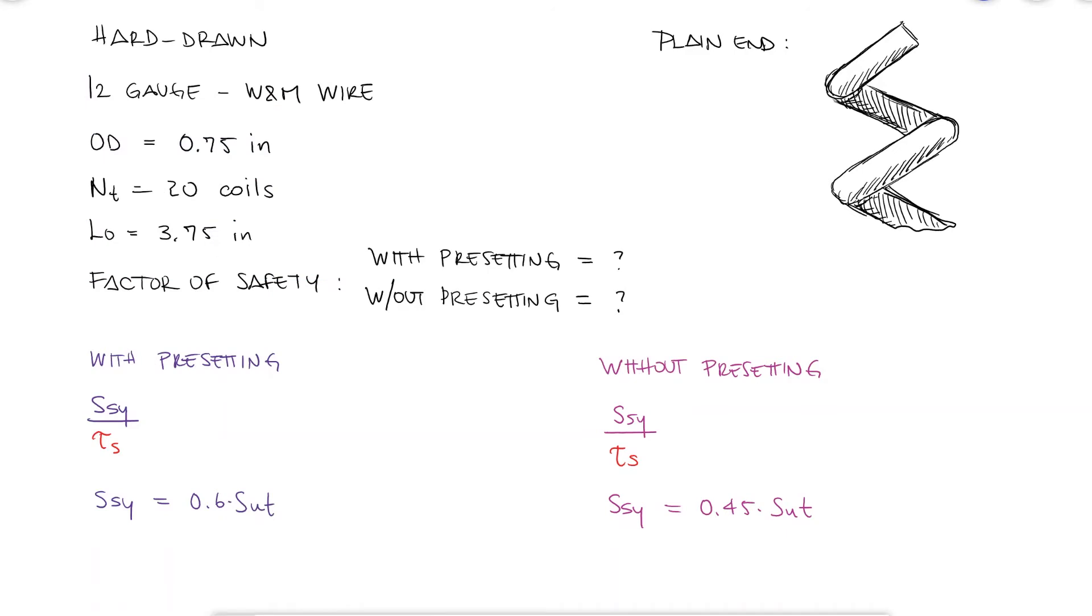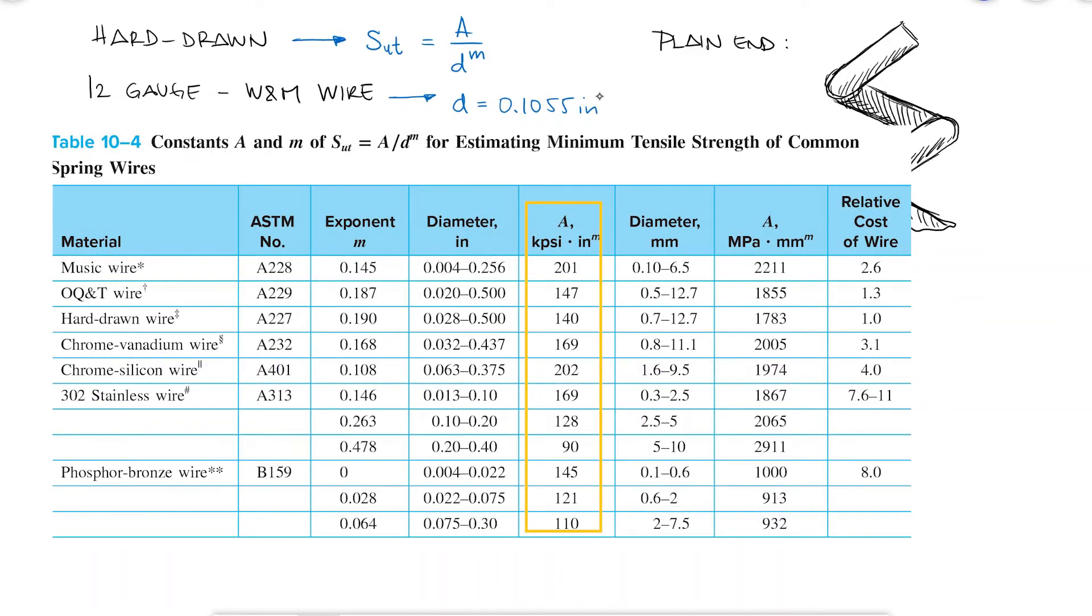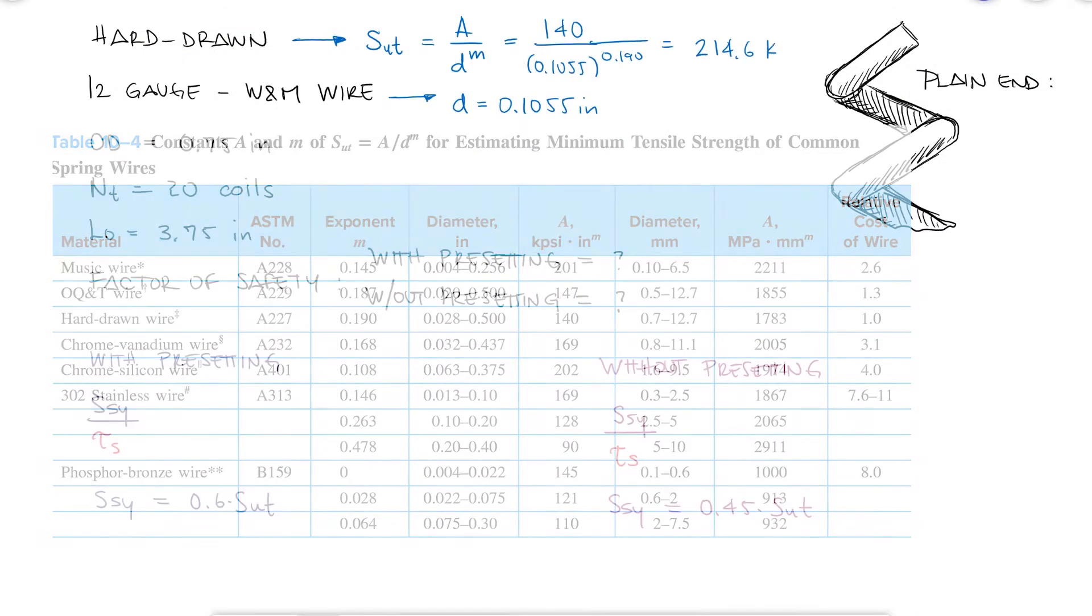The ultimate strength will be the same for both cases since they're both made of the same material and have the same diameter. The diameter for a 12 gauge W&M wire is 0.1055 inches, and the A coefficient and m exponent for a hard-drawn wire of that diameter are 140 and 0.190 respectively.